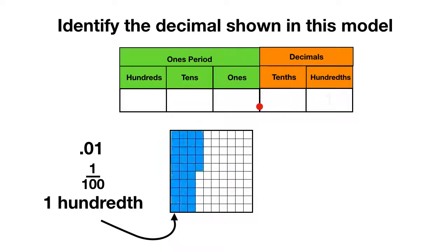So let's say we're shown this model and we need to identify what decimal it is. First we want to count out how many hundredths we have. You could count one through ten — there are ten in a column. So ten, twenty, thirty, thirty-one, thirty-two, thirty-three, thirty-four, thirty-five.